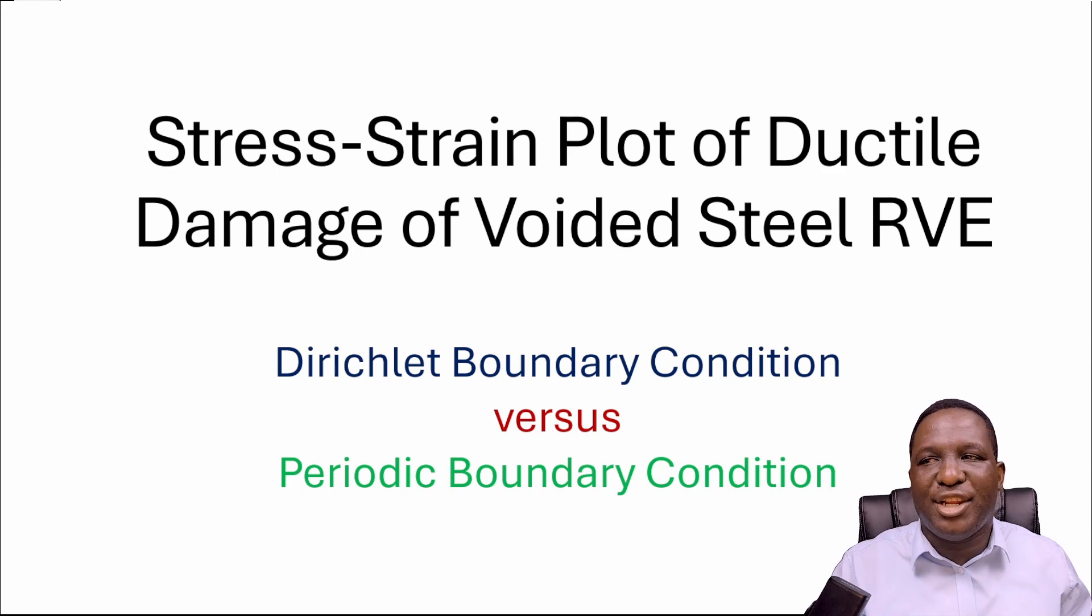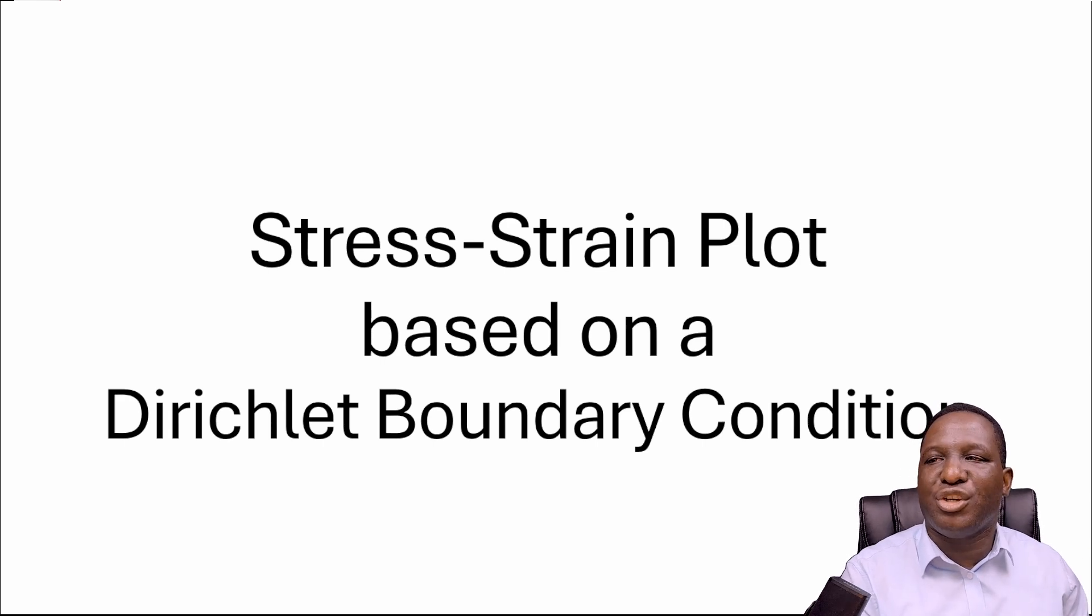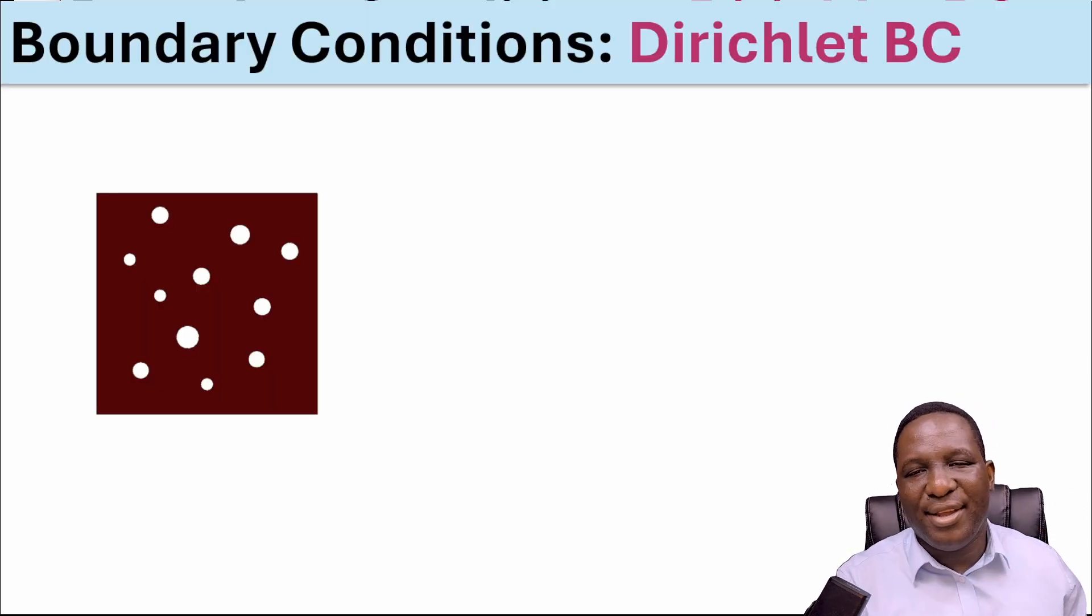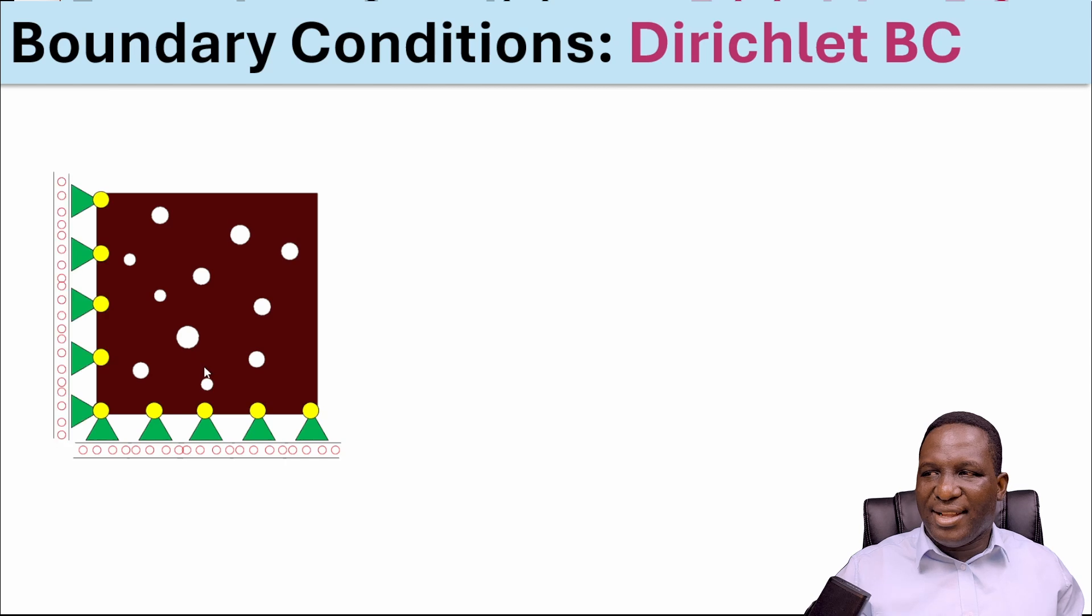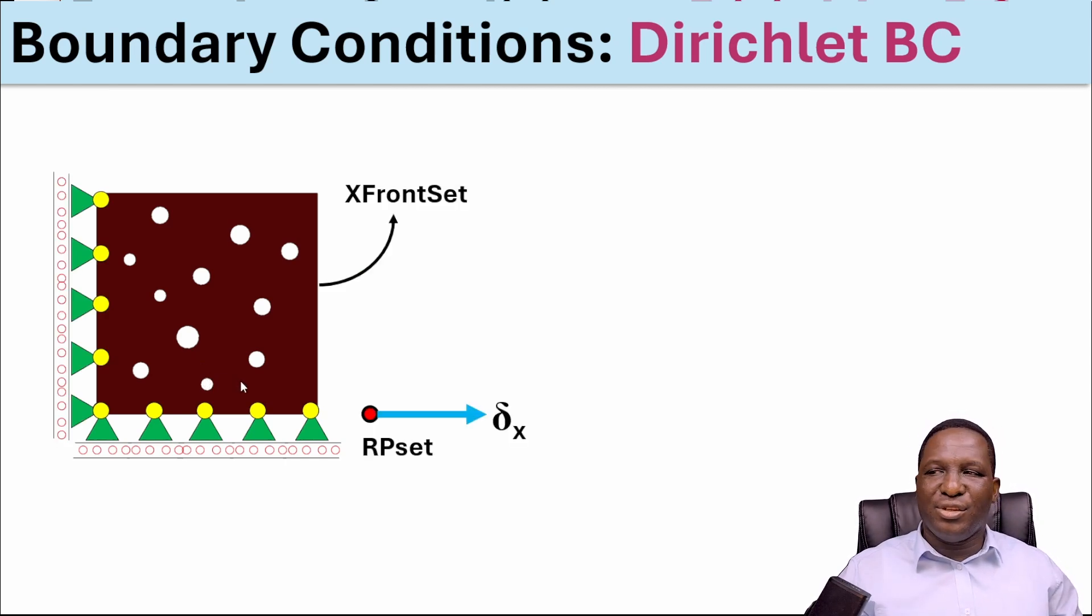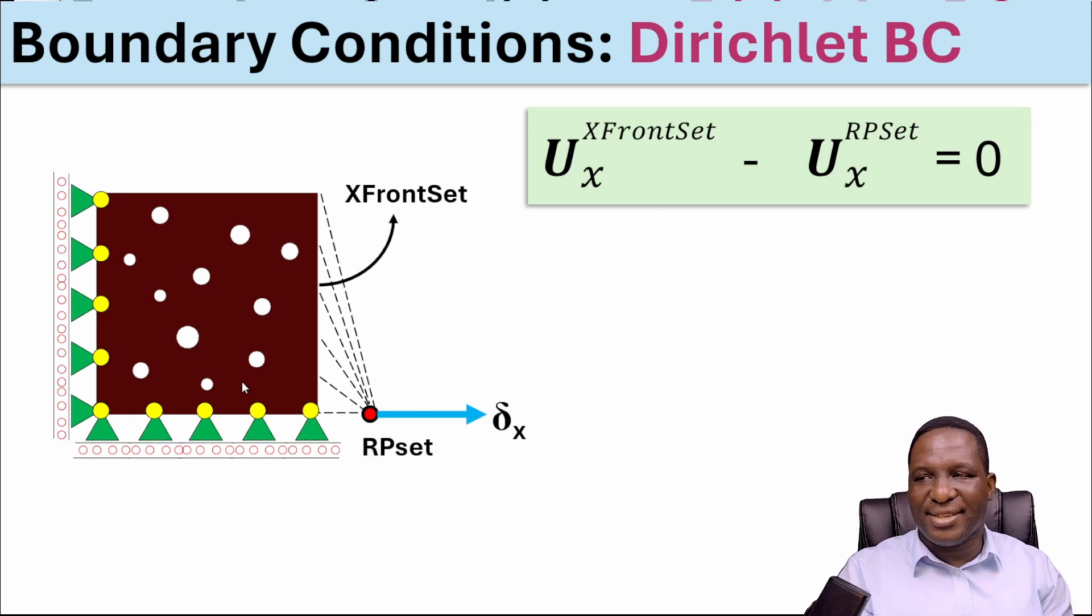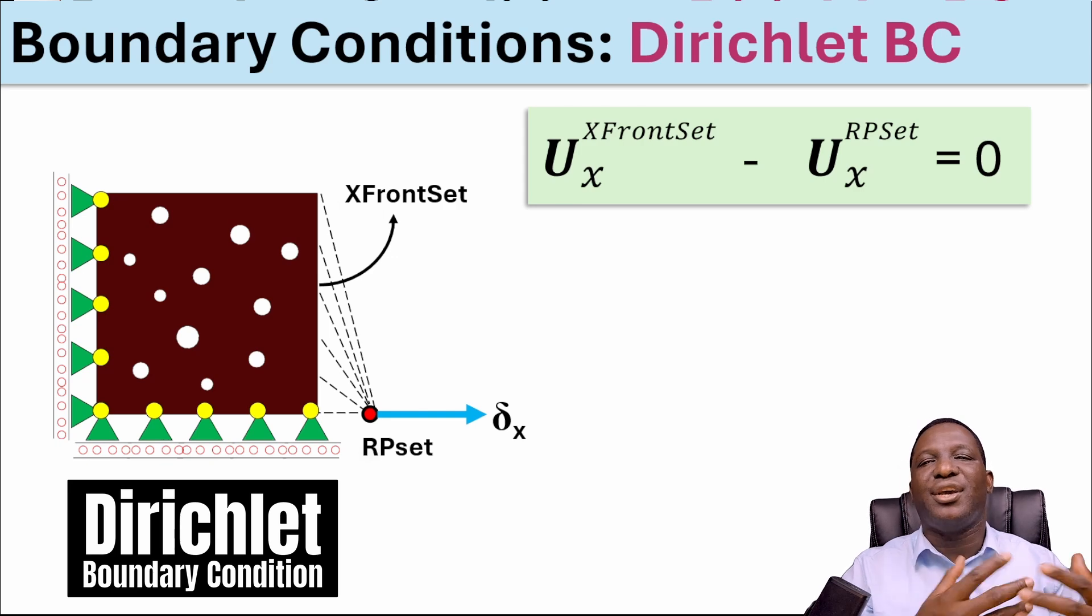Before we make the comparisons, I want to go through some basic theory of what's really happening when you're thinking about Dirichlet and periodic boundary conditions, starting with what a Dirichlet boundary condition will look like. We've got a representative volume element which is a voided steel material, it's got a length of 100 by 100, small holes which represent the voids. This is the boundary condition you need to impose on the system to create uniaxial deformation in the x-axis.